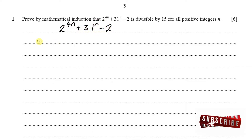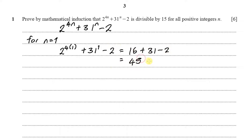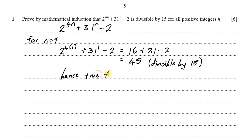We start by proving for n equals 1. If n equals 1, we have 2 to the power of 4(1) plus 31 to the power of 1 minus 2. Simplifying: 2 to the power of 4 is 16, and 16 plus 31 minus 2 gives us 45. Since 45 is divisible by 15, we conclude this is true for n equals 1.